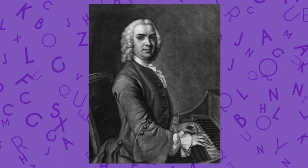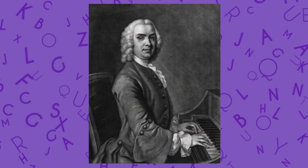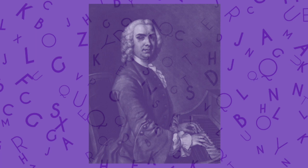Moving into the 18th century, voluntaries tended to be multi-movement works, often beginning with a slow movement before moving into a faster, more virtuosic, concerto-like movement. This culminated in the works of composers like John Stanley, who died in 1786. Stanley sometimes wrote voluntaries of even more than two movements, and he generally called for specific registrations to be used. Not everyone was a fan of the 18th century late Baroque voluntary, though, with critics saying that they were too flippant, too secular, and too showy for liturgical use.